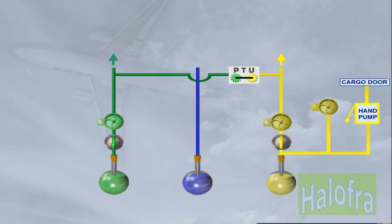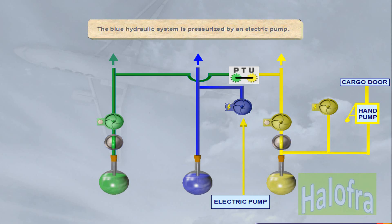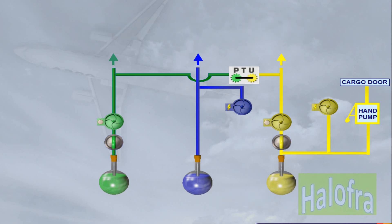The blue hydraulic system is pressurized by an electric pump. In an emergency, the blue system can be pressurized by the RAM air turbine, RAT.